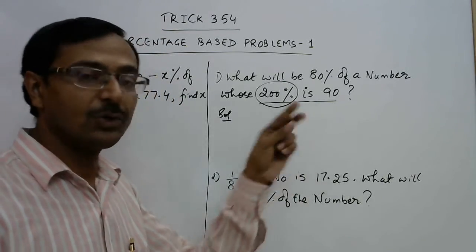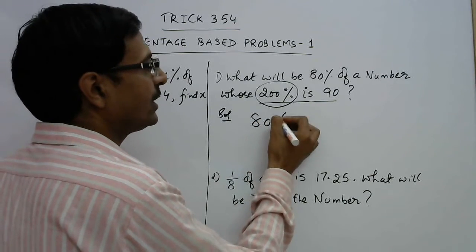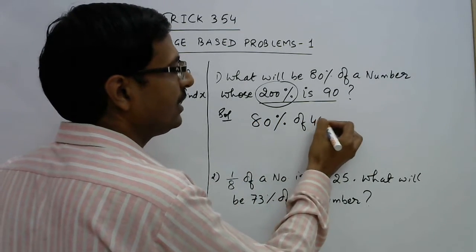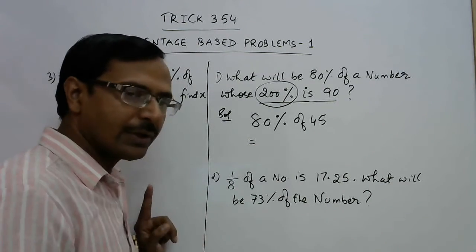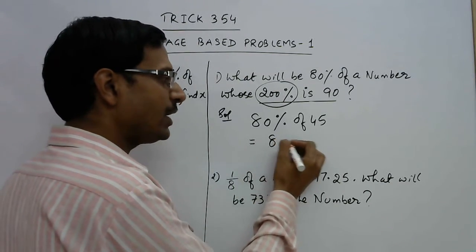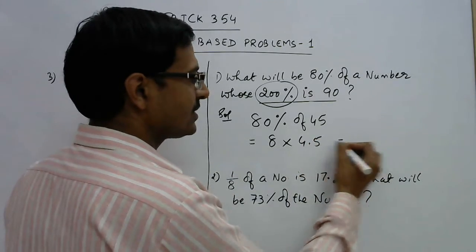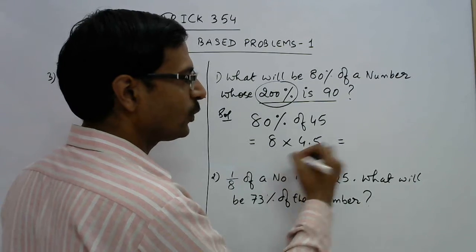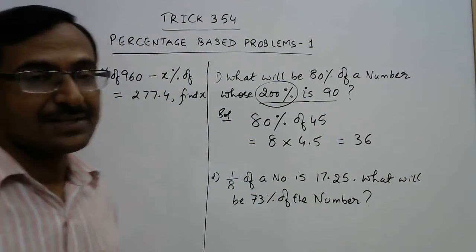If the number is 45, then 200% is 90. So all you need to do is just calculate 80% of 45, which is calculated through the shortcut 8 into 10%. So 8 into 10% is 4.5, so answer is 8 times 4 is 32, and 8 into 0.5 is 4, so 36 is the answer.